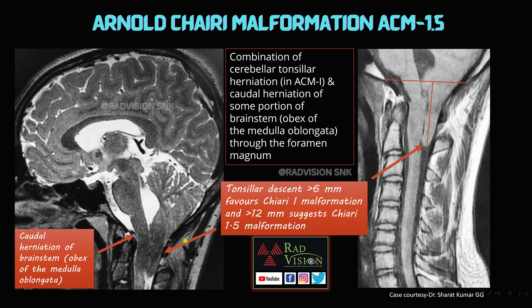In the next case, you can see herniation of the tonsil below the basal epistein line, and also herniation of the caudal portion of the medulla oblongata. Normally, tonsil herniation greater than 6 mm below the basal epistein line favors Chiari 1 malformation. But if tonsil herniation is greater than 12 mm and there is also herniation of the brainstem — specifically the obex of the medulla oblongata — definitely suspect Arnold Chiari malformation 1.5. This is a classical case of Arnold Chiari malformation 1.5. Thanks to Dr. Sharetsar for contributing this case.